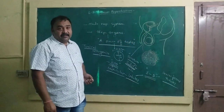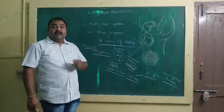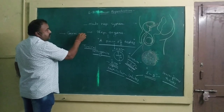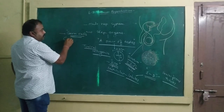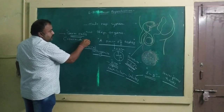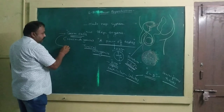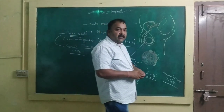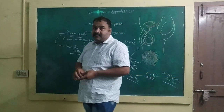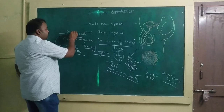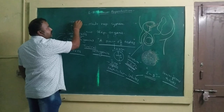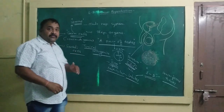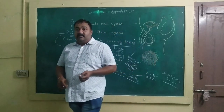The inner side of the seminiferous tubules contains two different kinds of cells. Germ cells are responsible for differentiating into mature sperms by the process of meiosis, whereas Sertoli cells provide nutrition to the developing germ cells.